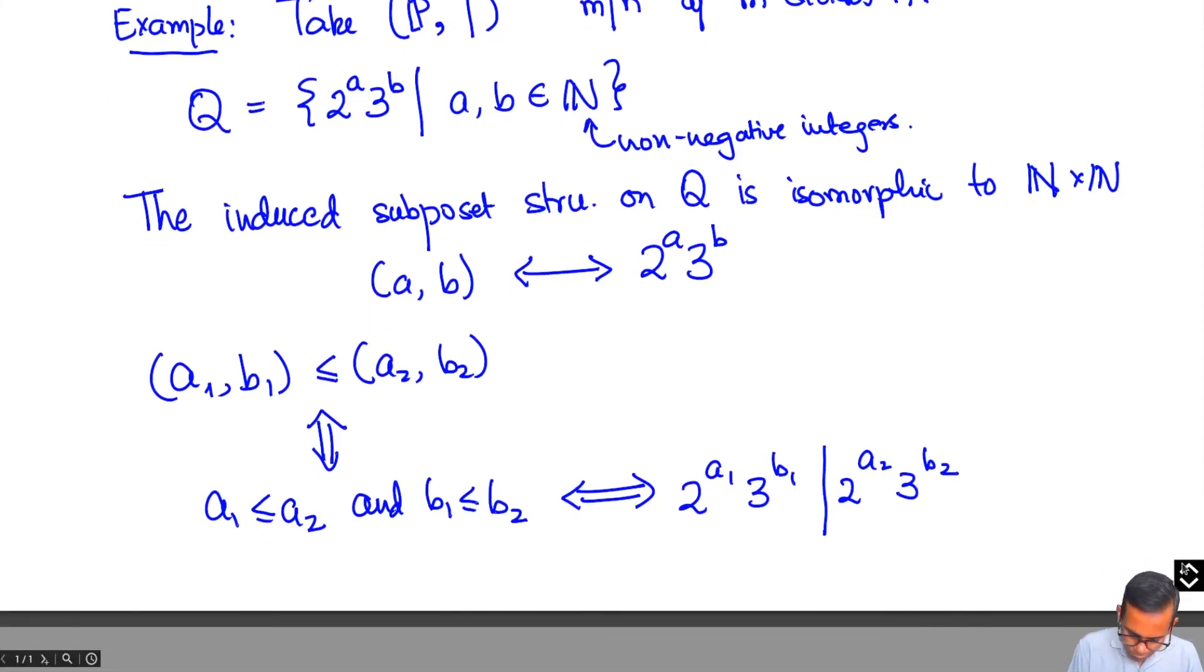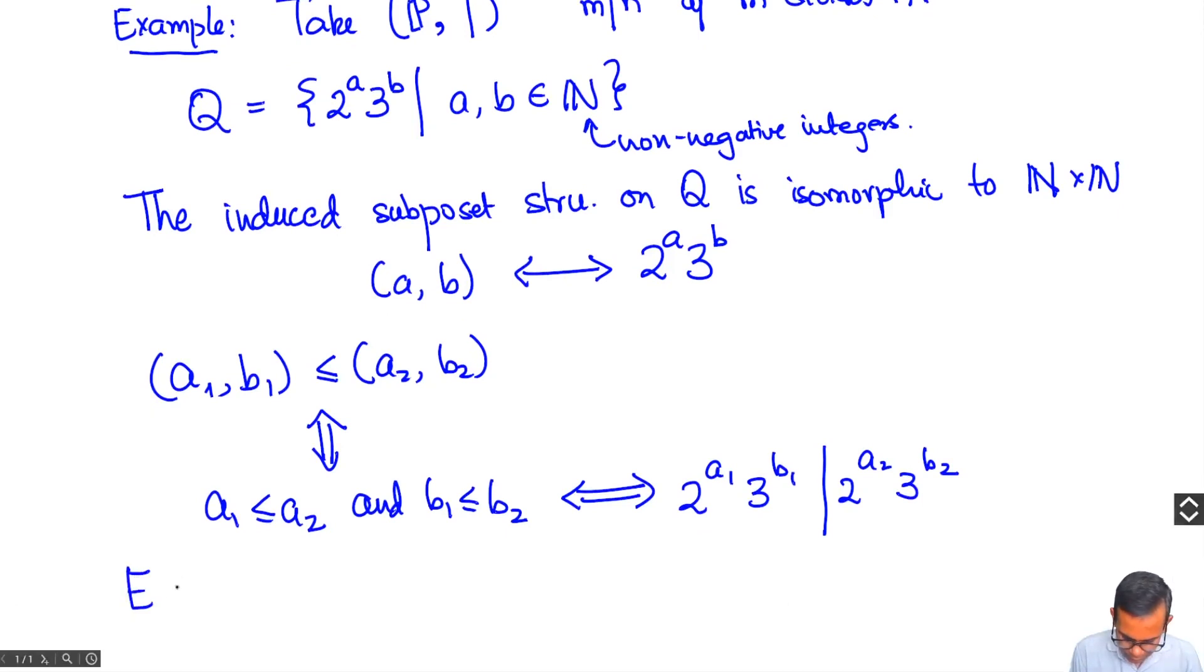Again, let me just leave you with a small exercise which you can think over. Can you find a subset of P such that the induced poset under the divisibility order is isomorphic to the set of all subsets of the set of three elements 1, 2, 3? Okay, so think about that.